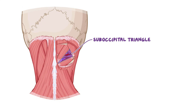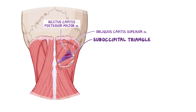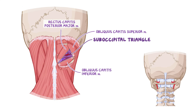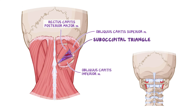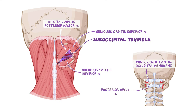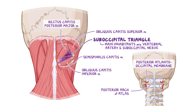Superomedially, the suboccipital triangle is bounded by the rectus capitis posterior major muscle, superolaterally by the obliquus capitis superior muscle, and inferolaterally by the obliquus capitis inferior muscle. The floor of the suboccipital triangle is formed by the posterior atlanto-occipital membrane and the posterior arch of the atlas, while its roof is formed by the semispinalis capitis muscle. The main inhabitants of the suboccipital triangle are the vertebral artery and the suboccipital nerve.